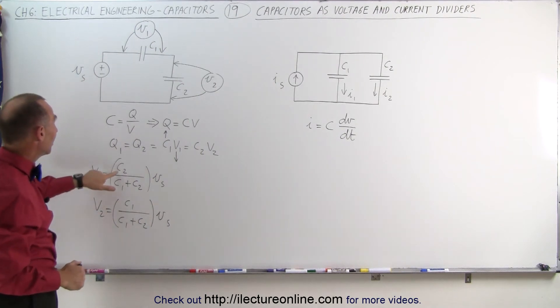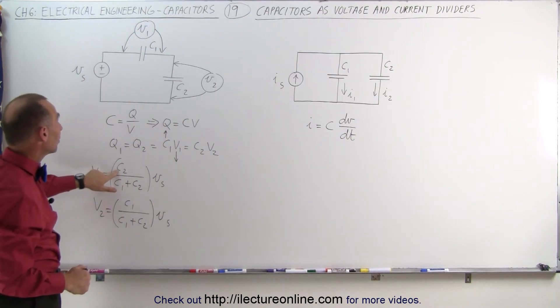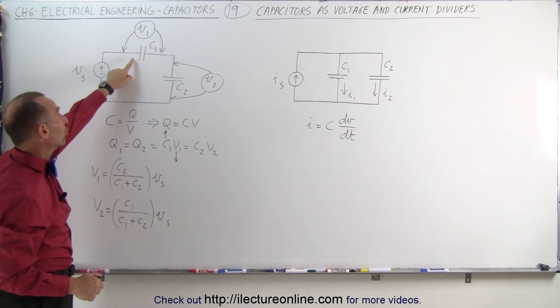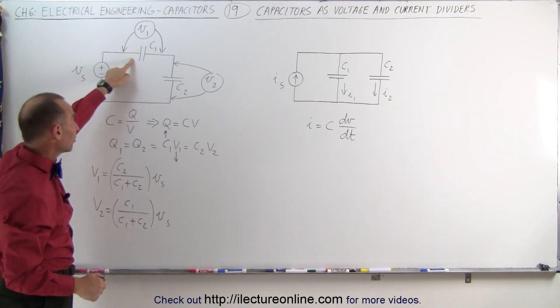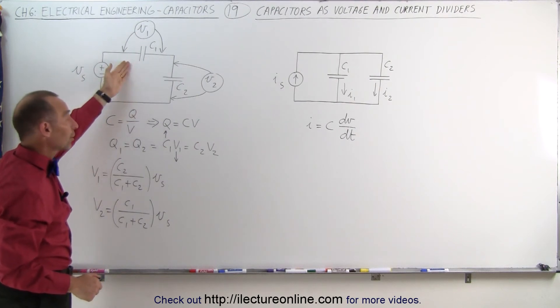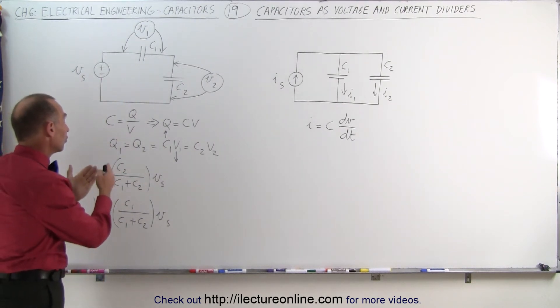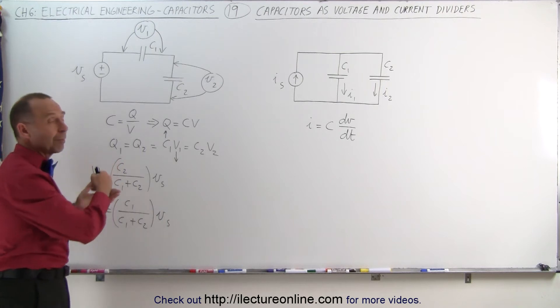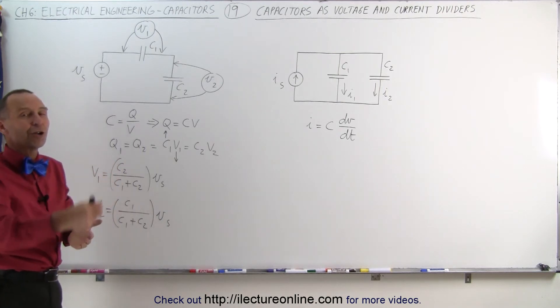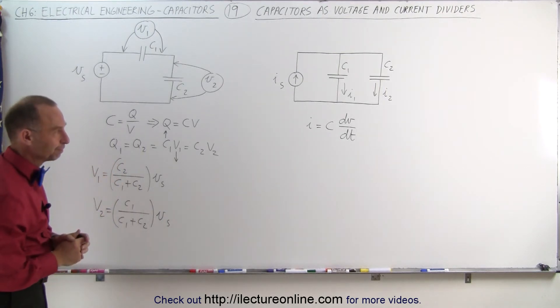If C2 is the larger capacitor, then C1 is the smaller capacitor. A smaller capacitor means a larger voltage, so it is proportional to the capacitance of the other capacitor.